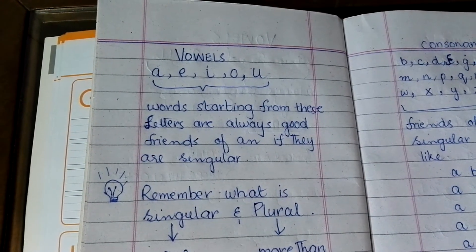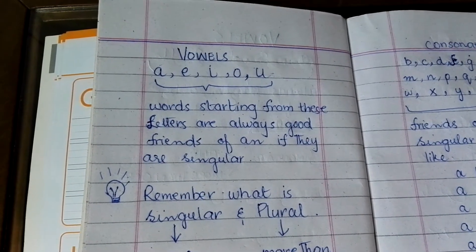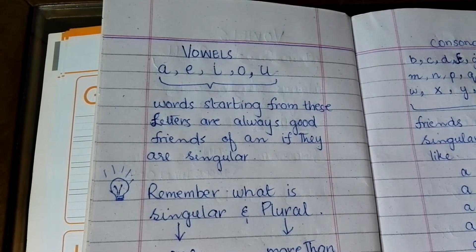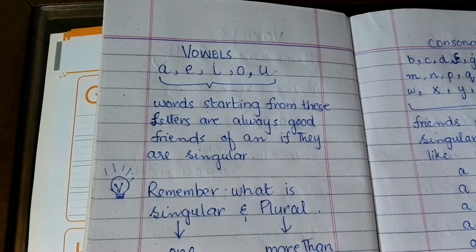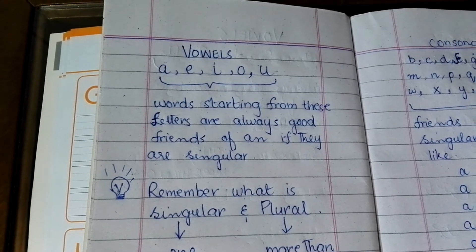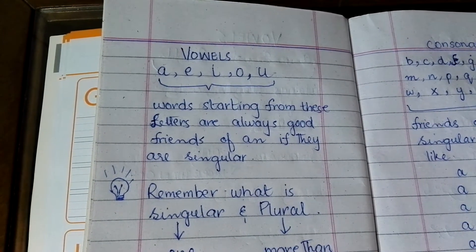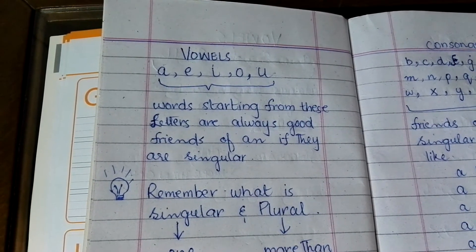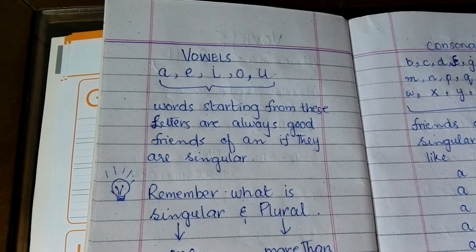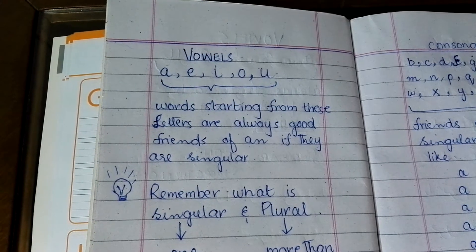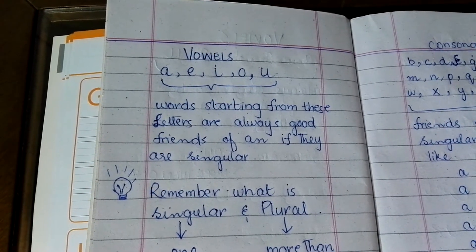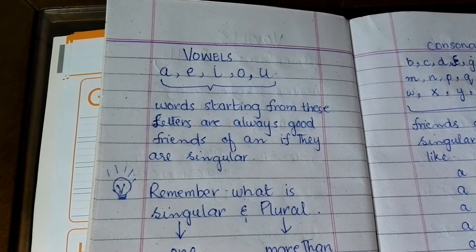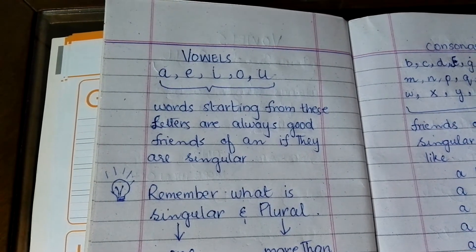Just recall the sound of these letters. The sound of A is 'a', the sound of E is 'ee', the sound of I is 'i', the sound of O is 'o', the sound of U is 'u'.